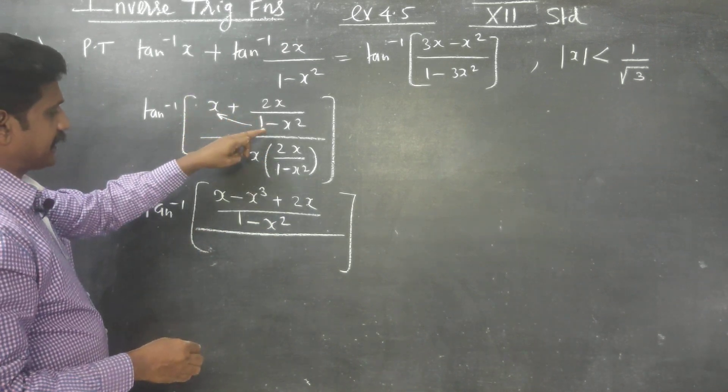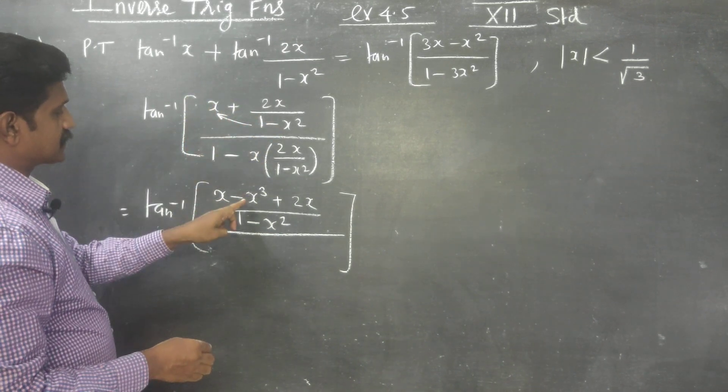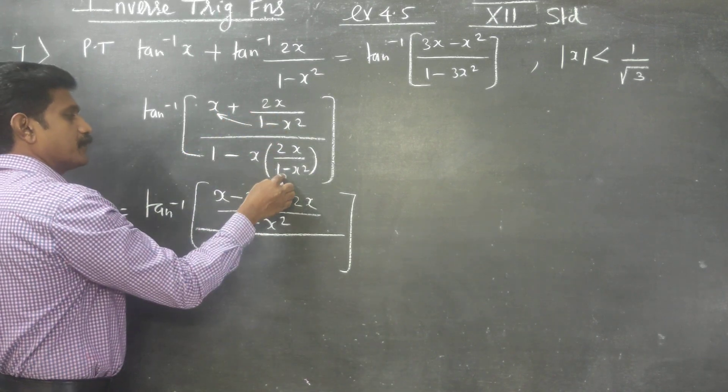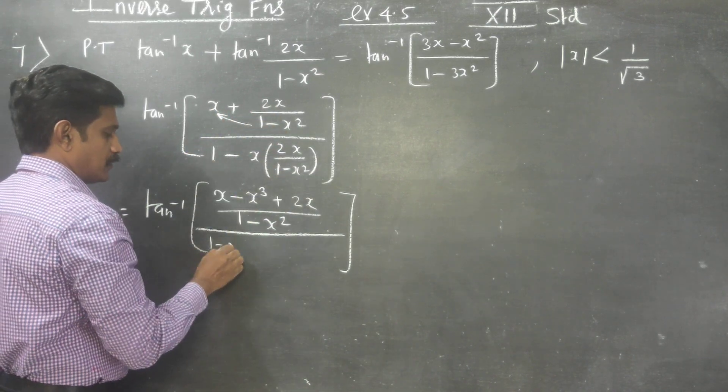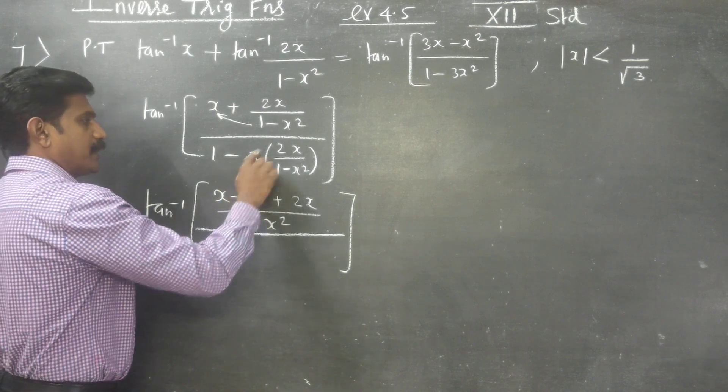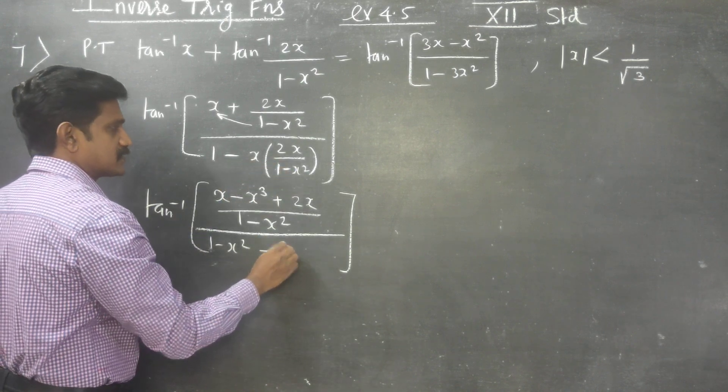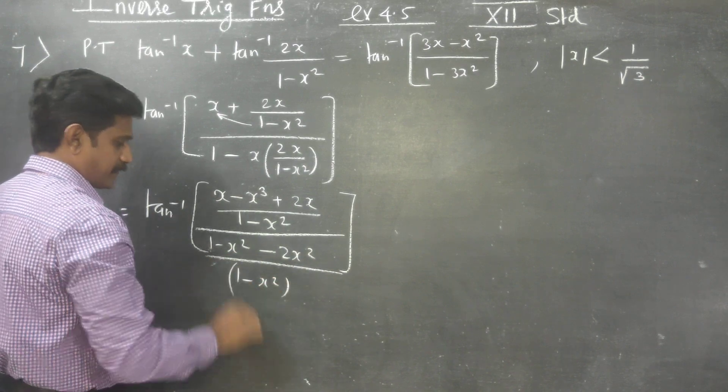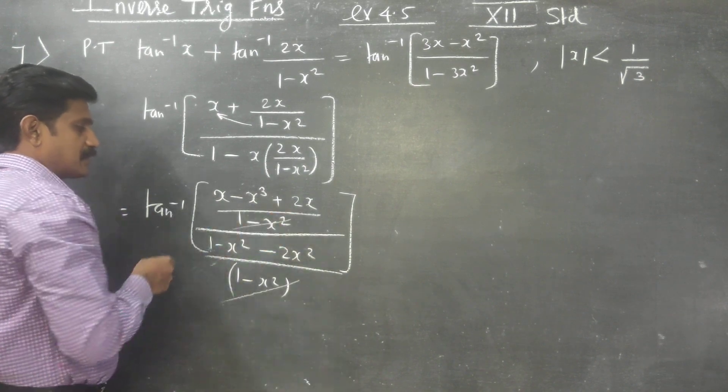Cross multiply x minus x cube plus 2x divided by 2x square, again cross multiply, 1 minus x square minus x square minus 2x square divided by 1 minus x square, right? This cancels with this.